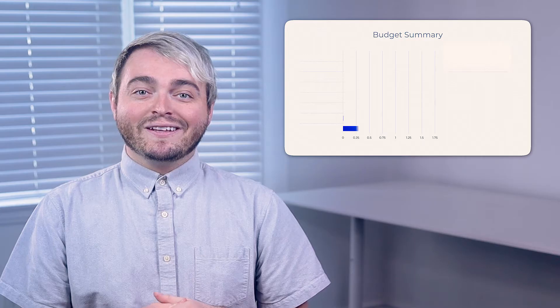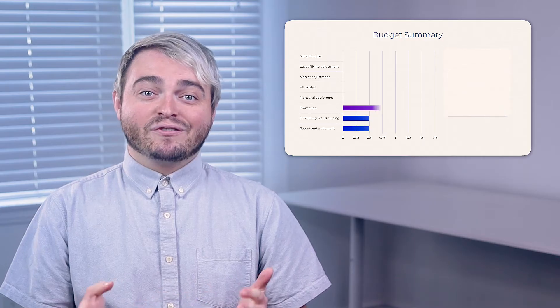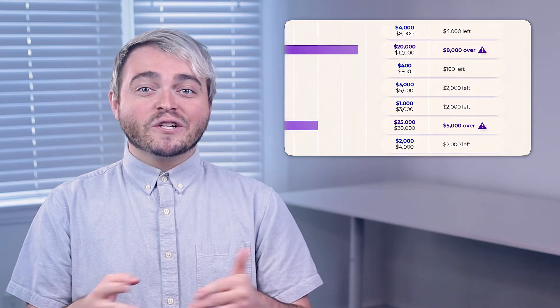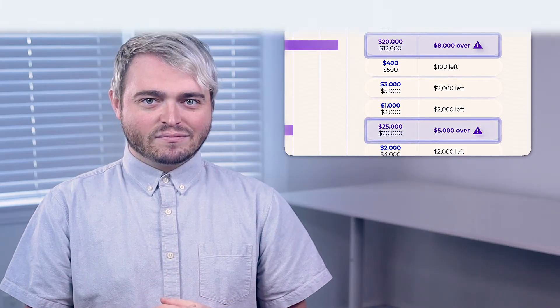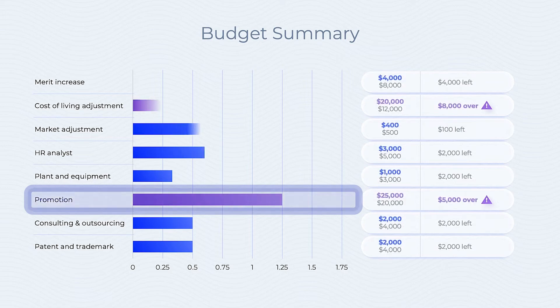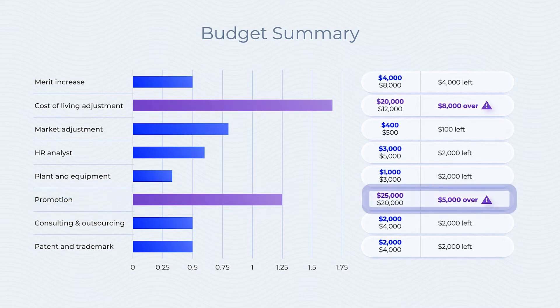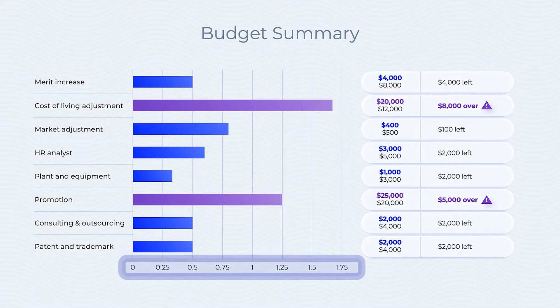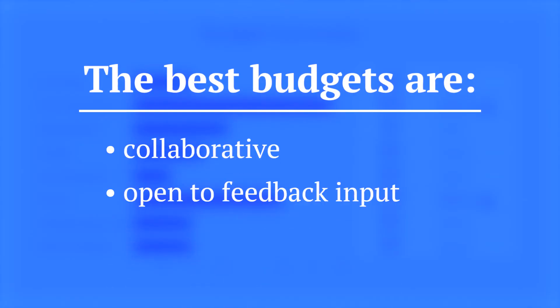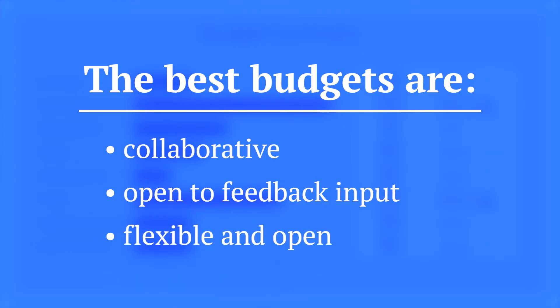Use a budget summary to quickly identify where the differences between the proposed and actual spending are greatest, and which spending categories should be flagged. For example, if the budget table shows that promotion expenses are over budget, it will flag them visually. At the bottom, the percentage of the budget reached is shown. The best budgets are collaborative, take input from all managers across an organization, and, most importantly, are flexible and open to adjustment.